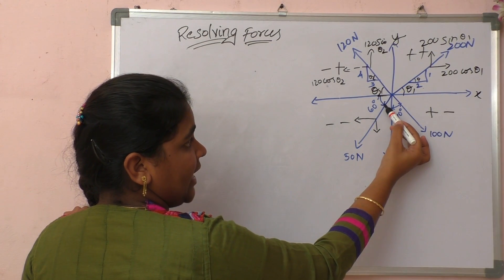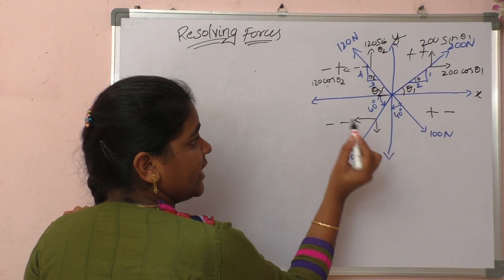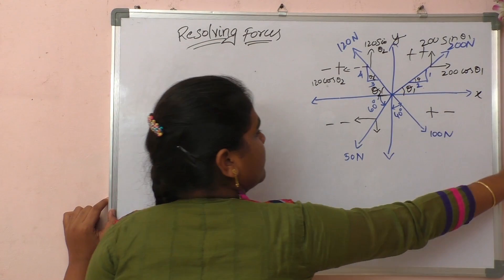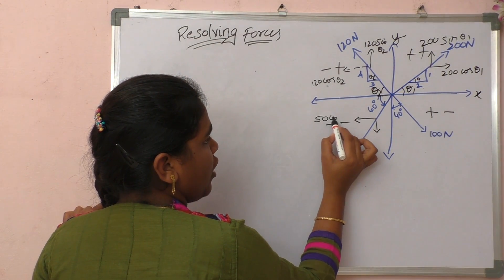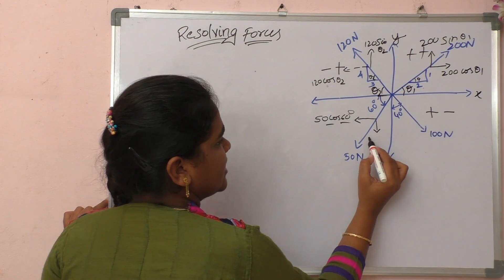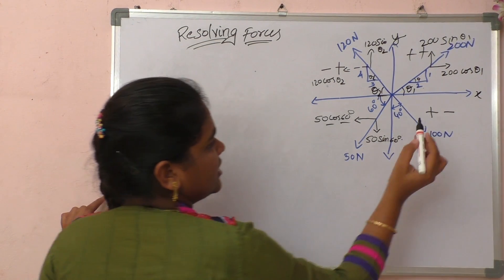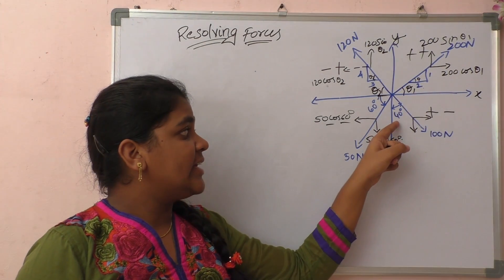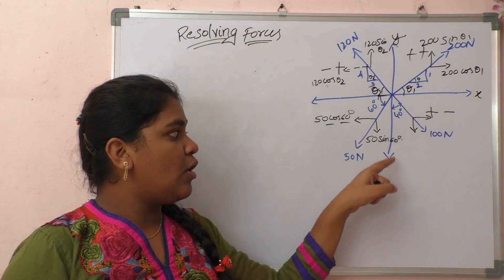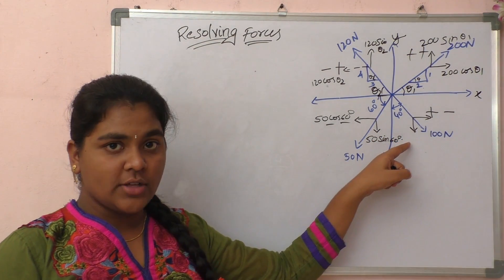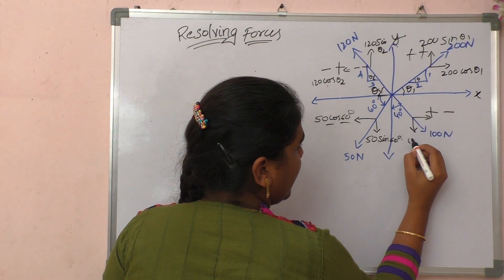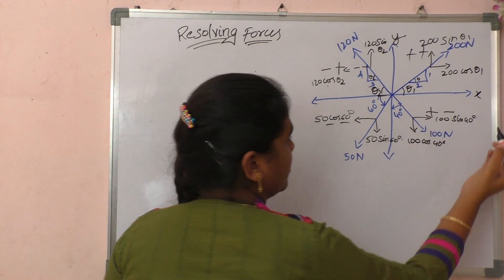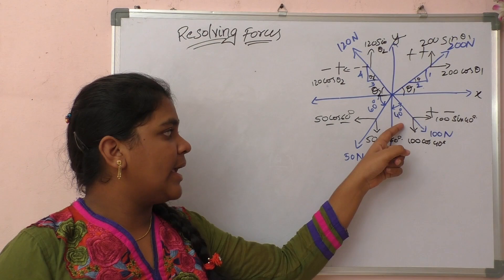For the 50 newton force, which makes an angle with the x-axis, the x-component is 50 cos(60°) and the y-component is 50 sin(60°). For the 100 newton force, the angle is made with the y-axis, so the y-component is 100 cos(40°) and the x-component is 100 sin(40°).